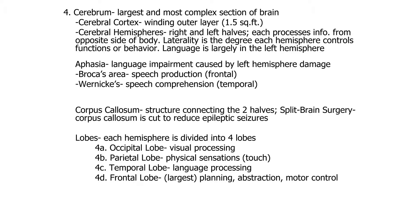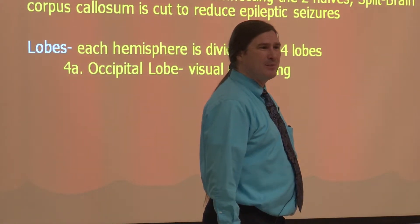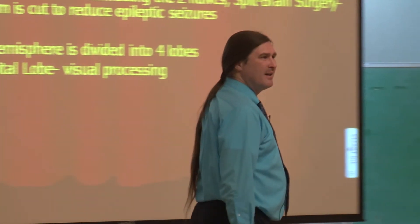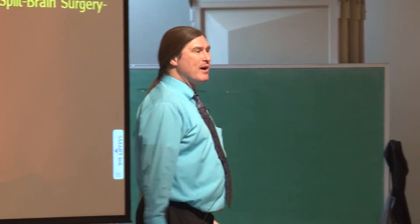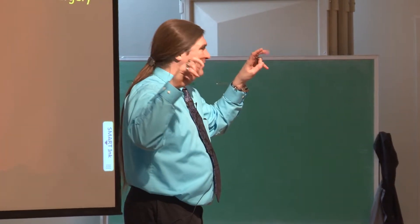The occipital lobe, visual processing. That is in the back of the head. And a great way to remember that is occipital sounds like ocular, and ocular has to do with vision. Another way to remember it is cartoons. You ever seen somebody get hit in the back of the head on a cartoon? You hit them in the back of the head on a cartoon, and what happens? Double vision. They see stars, they have double vision, they start seeing things.